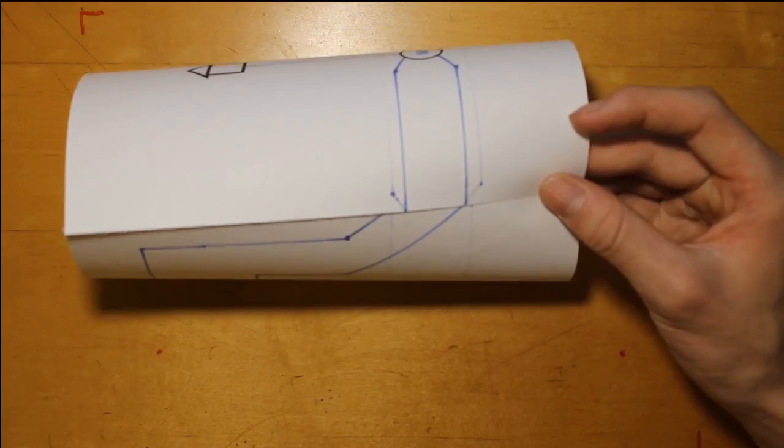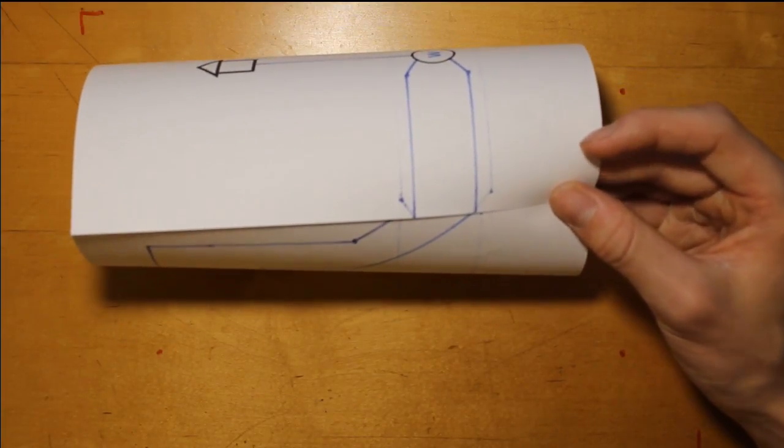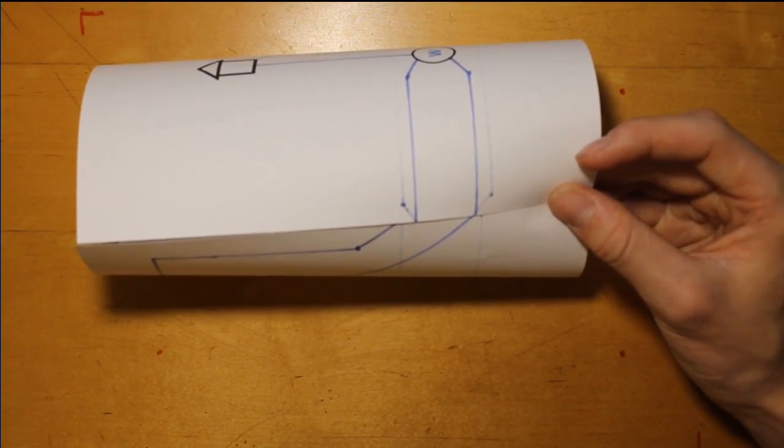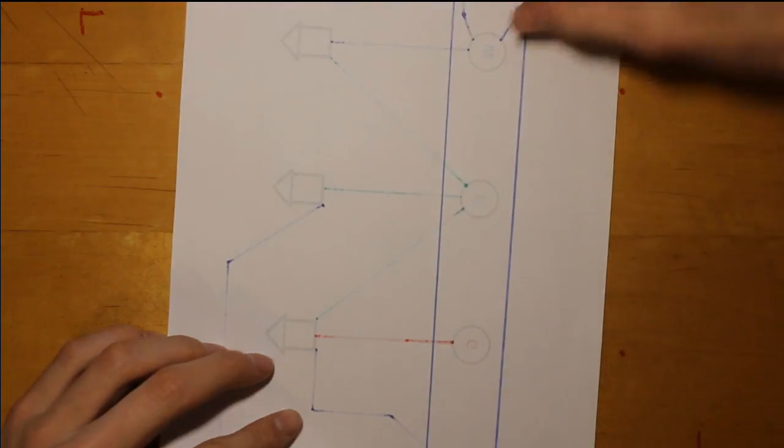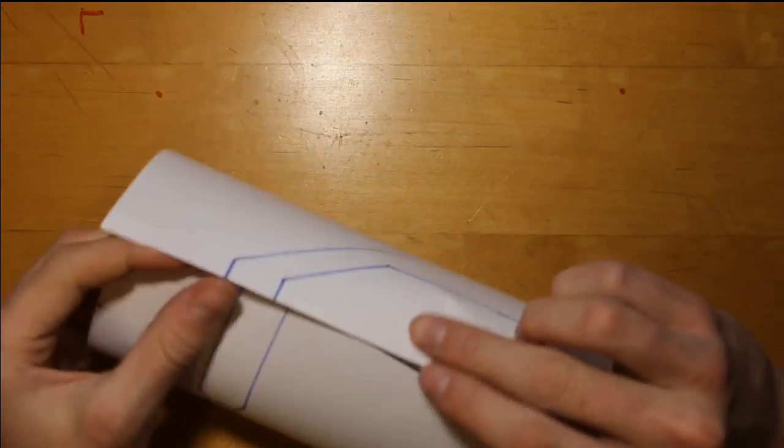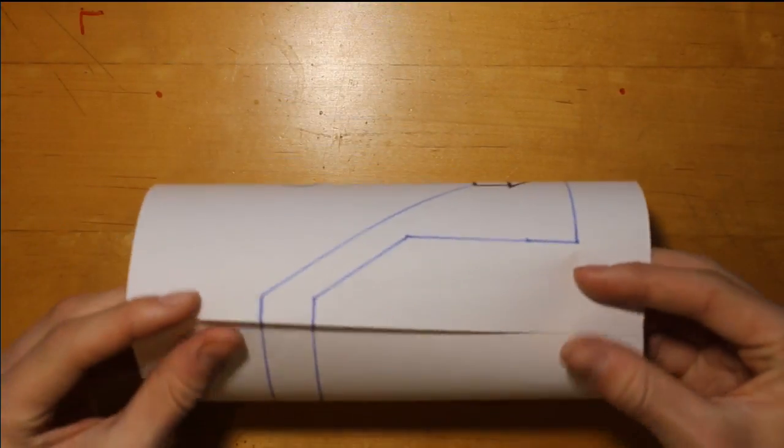If you do not know what a torus is, a real-world example of a toroidal object is a donut or bagel shape. Now, we can remove the lines that were on the back, and that will leave us with a much neater sketch, like this one here.